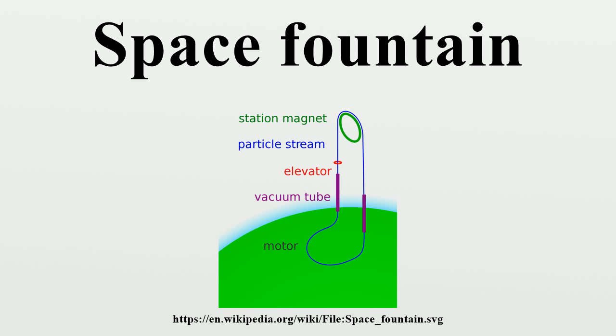The tower would be capable of lifting payloads throughout its construction as well, including its own construction materials. Safety measures. To provide redundancy, a space fountain could be built with more than one projectile loop and power supply.